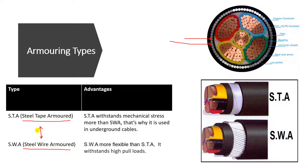The first one, the steel tape armored, as you can see here in these images — this is a steel tape, that's why it's called steel tape armored, made of steel tape. Now this one is a steel wire armored, made of wires.